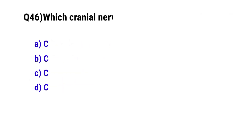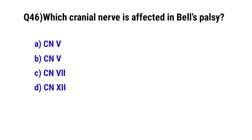Question number 46: Which cranial nerve is affected in Bell's palsy? The correct option is C: cranial nerve 7.